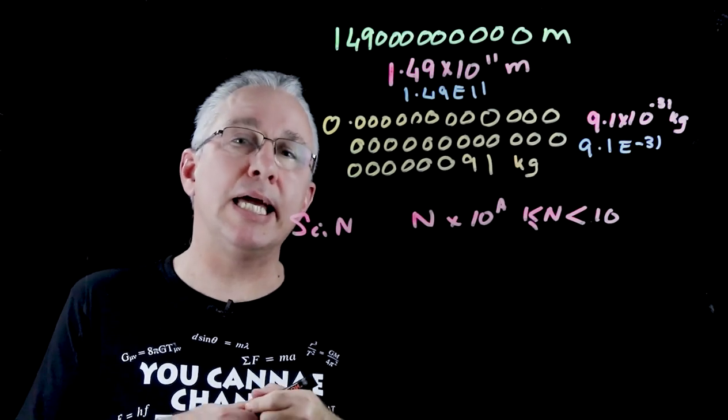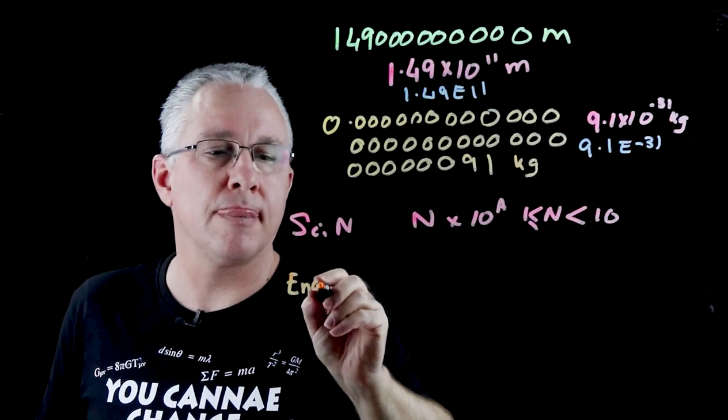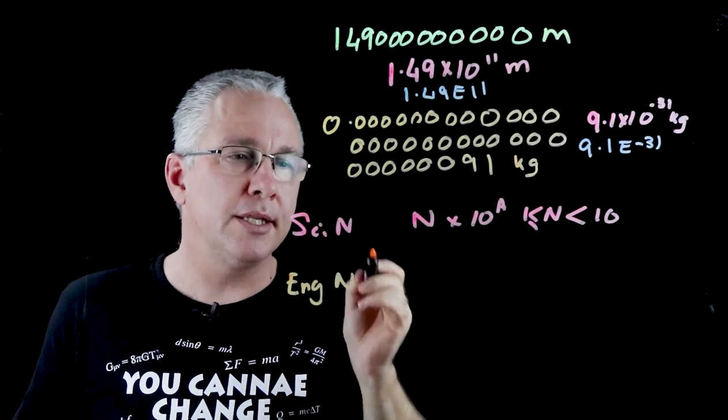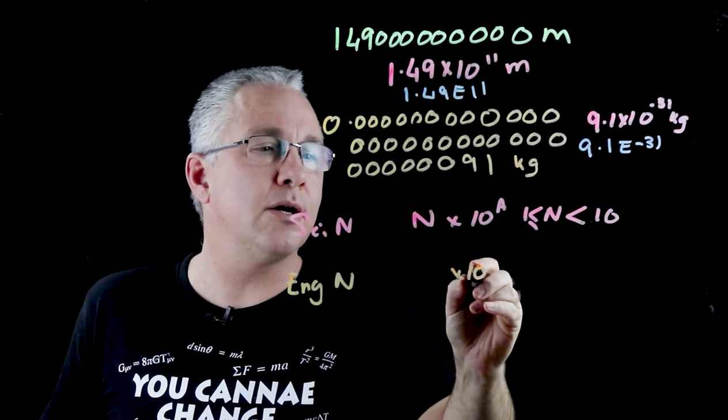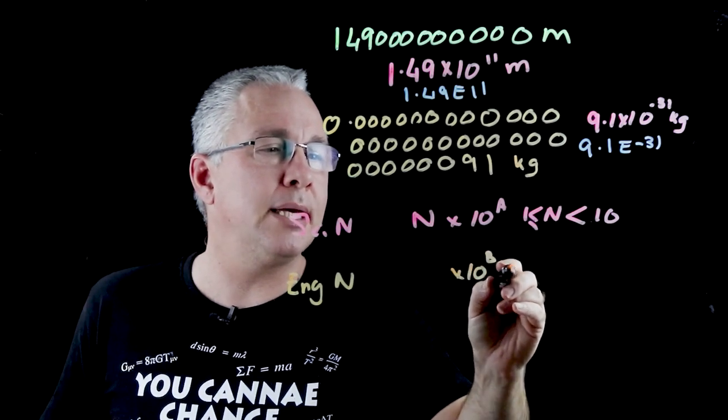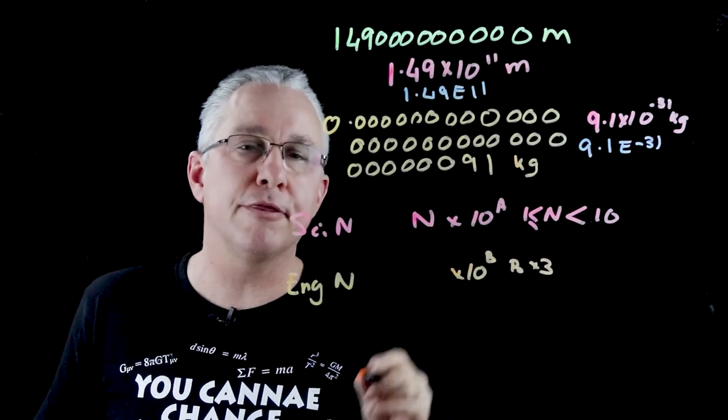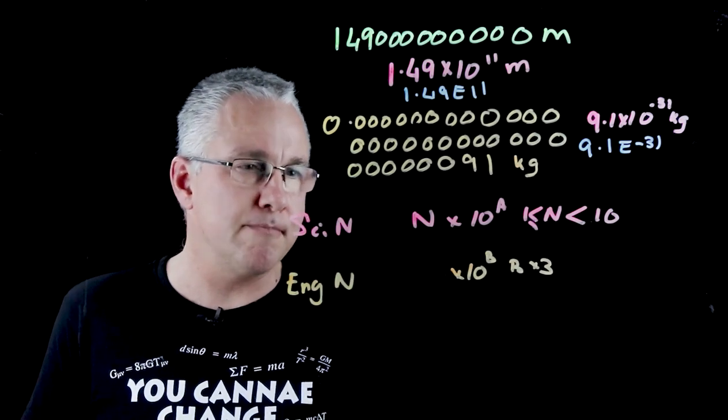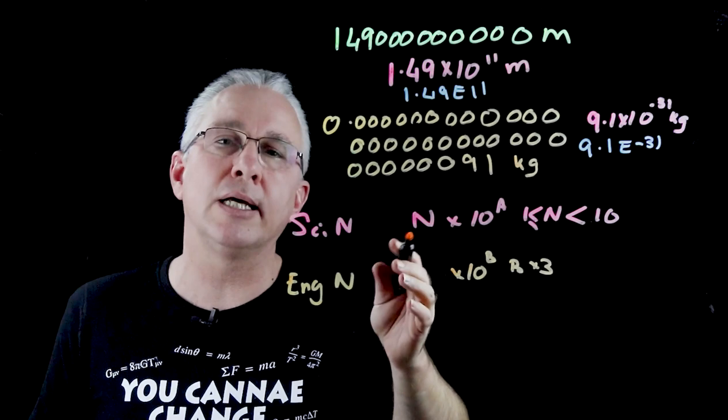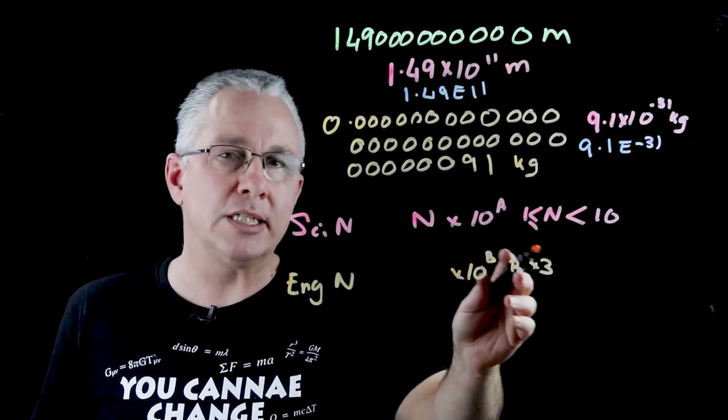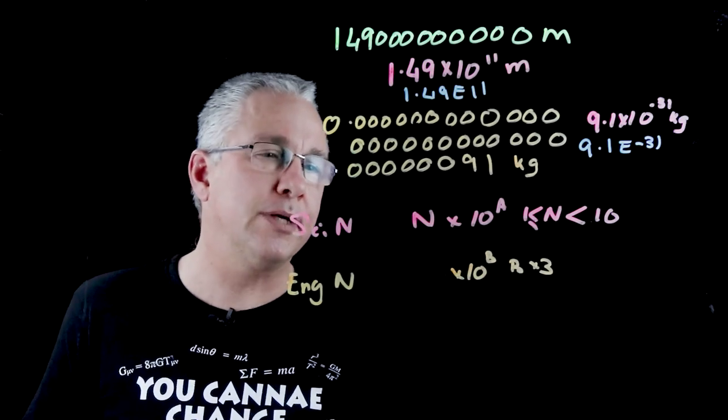But what about engineering notation? Well, engineering notation has a similar structure. The only difference is that generally speaking, it's × 10 to the power of a number, but that b needs to be a multiple of 3. And I'll explain that in a moment. But therefore, this number can actually be greater than 1 and less than 1, but generally within the order of 3.